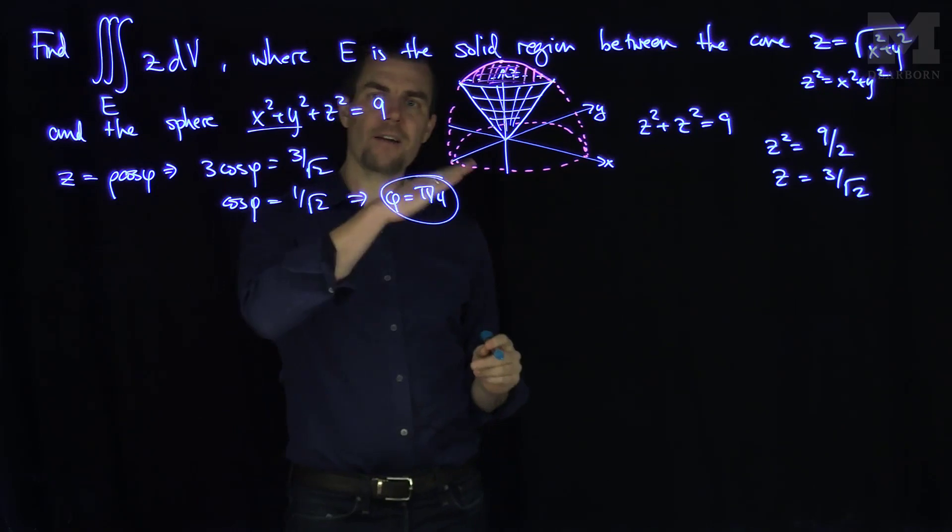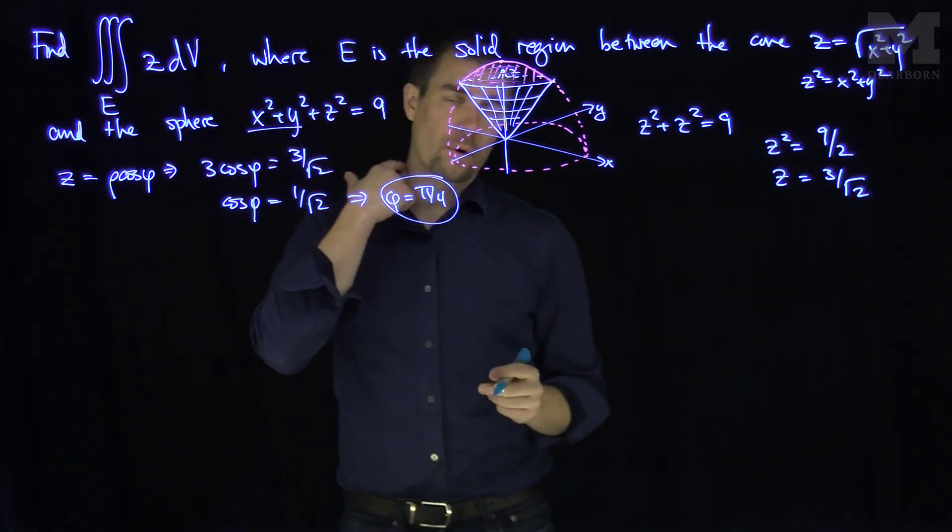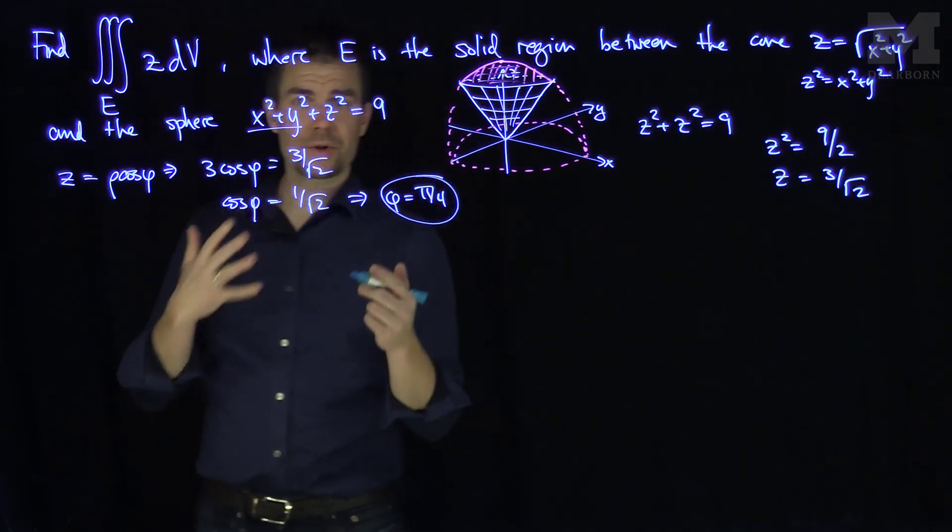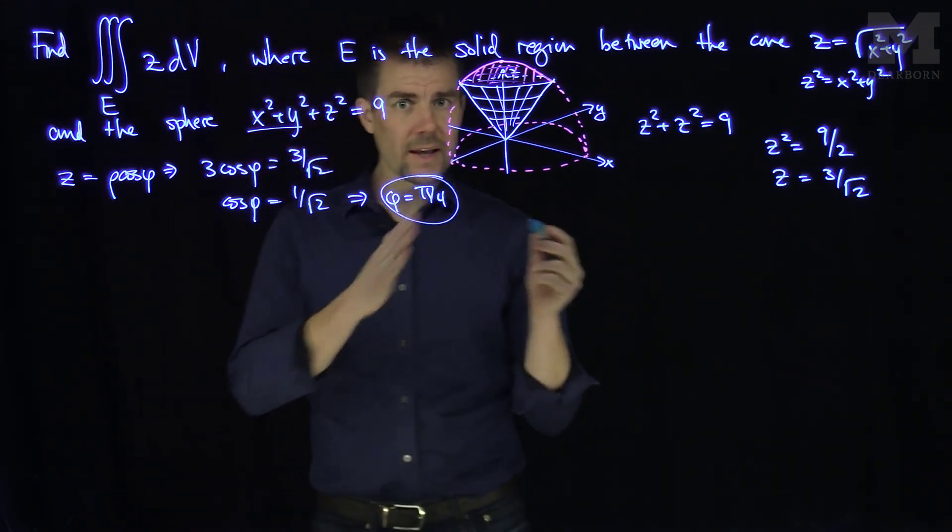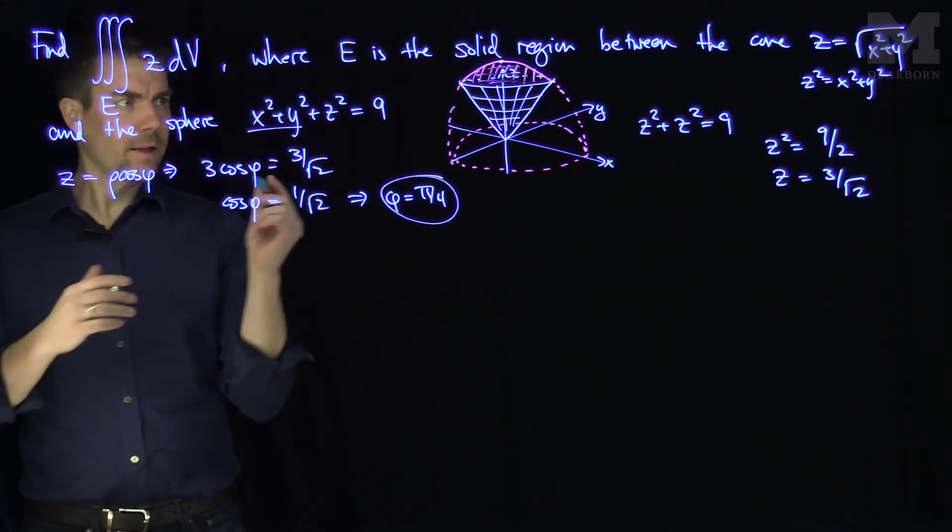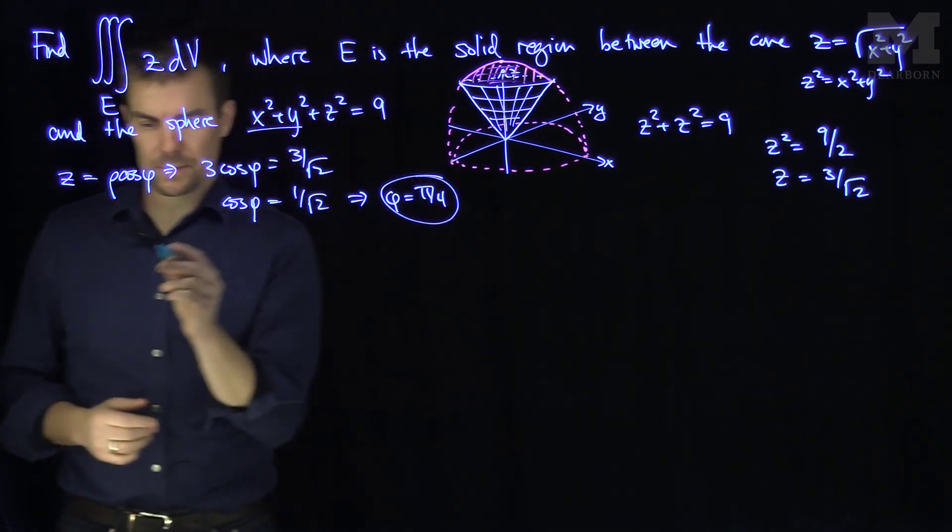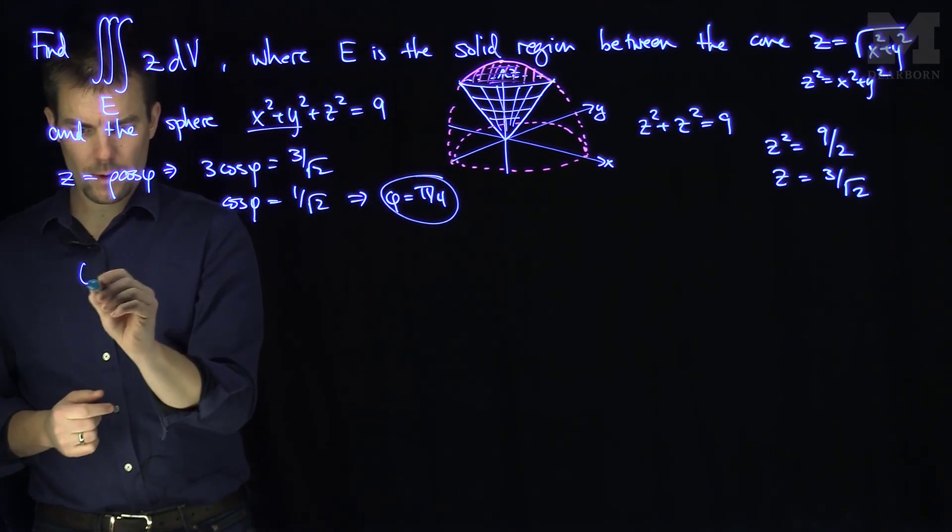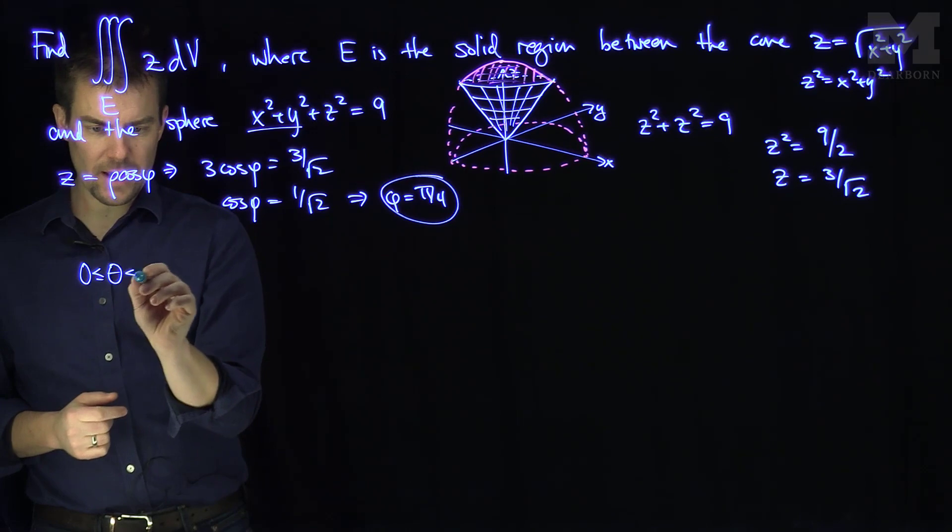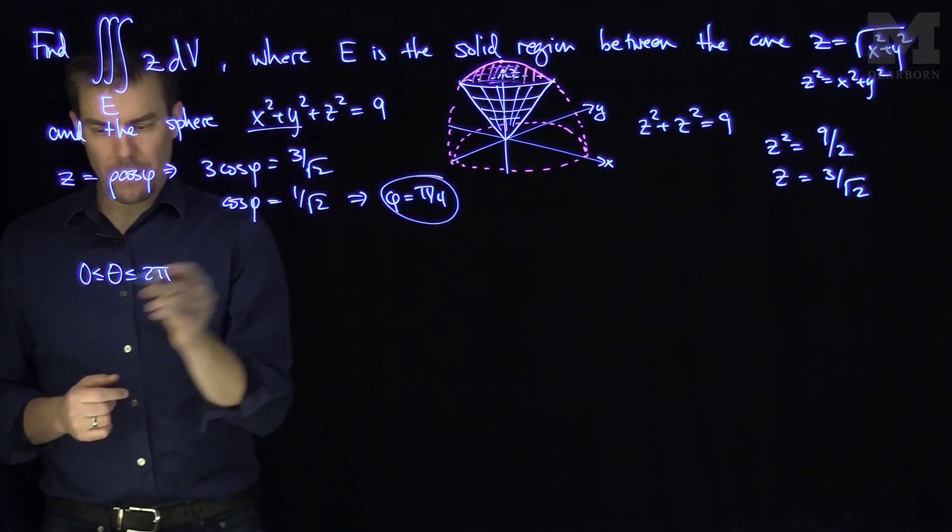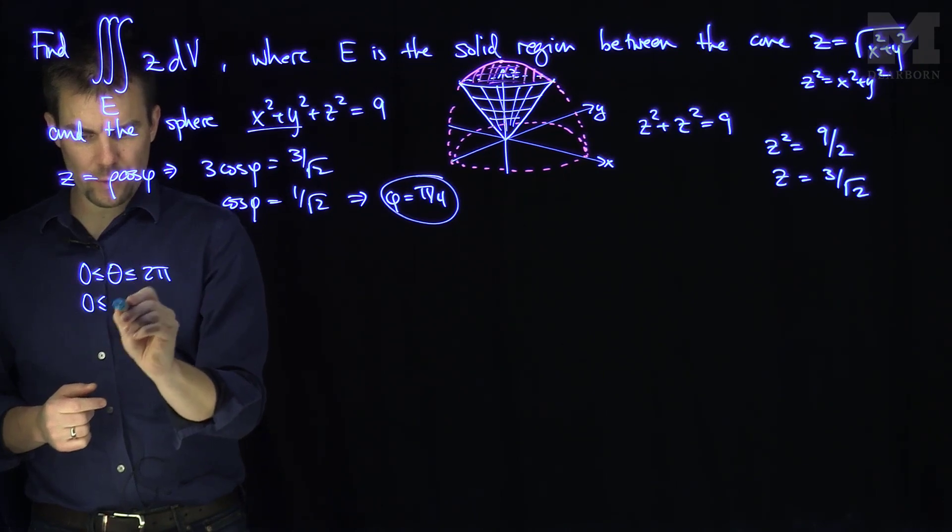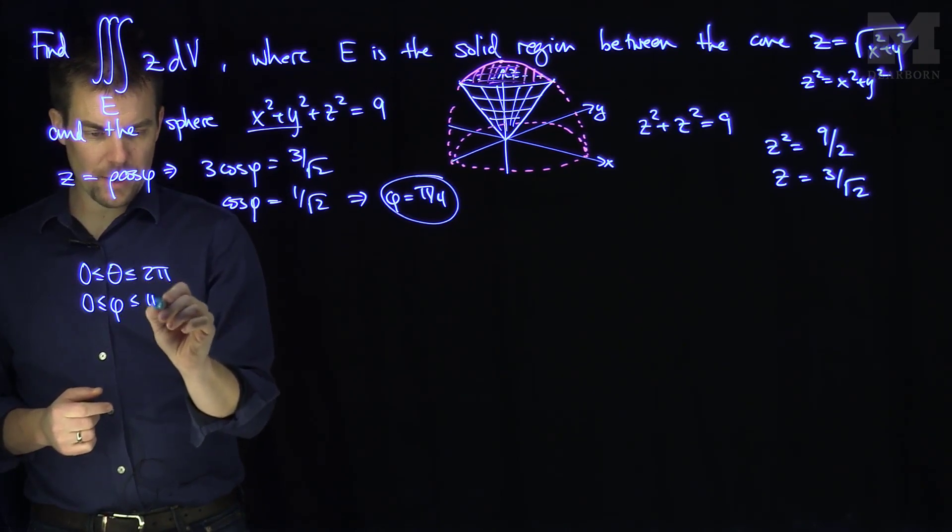So my limits of integration for the phi variable are going to be between 0 and pi over 4. So now we're in a position to parameterize this region. So what will happen over here? So, in this region, my theta variable is going between what? My theta goes between 0 and 2 pi, because we make a full revolution around the x-y axis. My longitudinal variable phi goes between 0 and pi over 4.